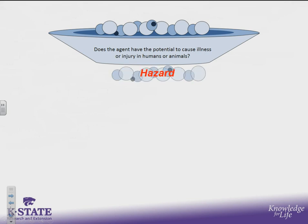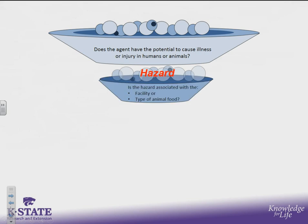With mycotoxins, we would consider yes — it's a food safety hazard. It exists and has the potential to cause illness in both humans and animals. So then the second question is: is that hazard associated with either the facility or the type of animal food? If my facility is bringing in ingredients or raw materials that are susceptible to mycotoxin, then that answer is yes. Furthermore, if my facility is manufacturing, processing, packing, or holding a type of animal food that is the food for an animal susceptible to mycotoxins, then yes, that would also be true. And so if one or both of those are accurate — which in many cases they are — then that hazard would be known as a known or reasonably foreseeable hazard.